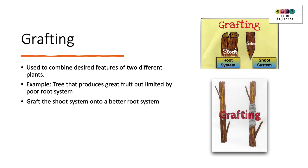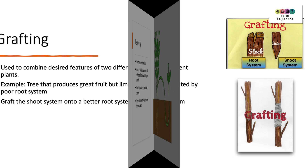The next method is grafting, and this is used to combine desired features of two different plants. For example, you could have a tree that produces great fruit but is limited by having a poor root system. So you graft the shoot system onto a plant that has the better root system, creating a hybrid-type plant combining the best of both plants.